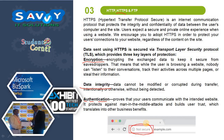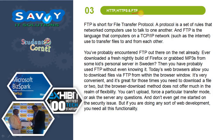If 'not secure' is indicated in the browser, it means the site is using HTTP only, not HTTPS. If it is secure, it shows a lock icon, indicating HTTPS. FTP is short for File Transfer Protocol. A protocol is a set of rules that networked computers use to talk to one another. FTP is the language that computers on a TCP/IP network use to transfer files to and from each other — you may have encountered FTP when downloading files or grabbing content from a server. In web development, you need all this functionality.